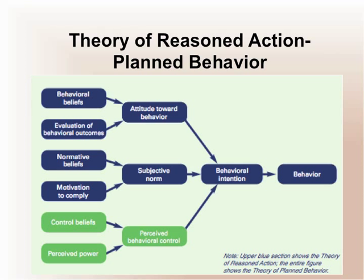What you notice from this logic model is that behavior is the thing we're interested in. Behaviors are things such as getting screened for tuberculosis, getting a mammography, exercising, or eating a healthy diet. The theory of planned behavior suggests that behavioral intentions are the primary and major predictor of behavior. If we can get people to a point where they intend to get a mammography or engage in physical activity, we have a high degree of confidence that we can actually get them to behave.